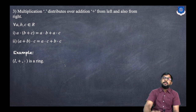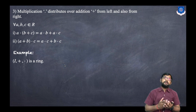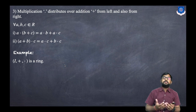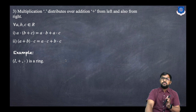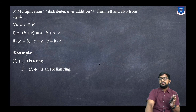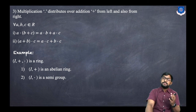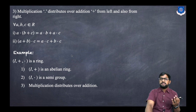For example, (ℤ, +, ·) is a ring because (ℤ, +) is an abelian group, (ℤ, ·) is a semi-group, and multiplication distributes over addition. You can verify this yourself — we have done similar examples in previous sessions for abelian groups and semi-groups.